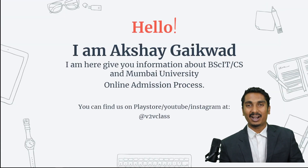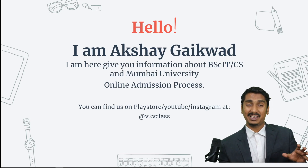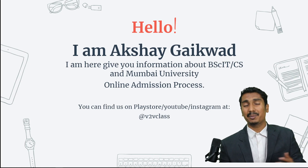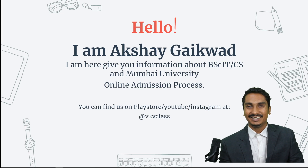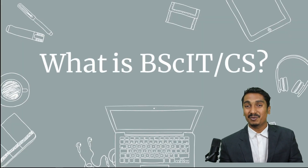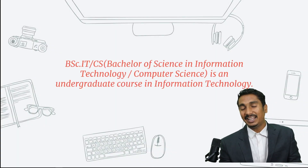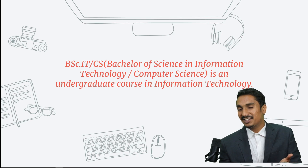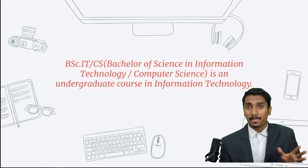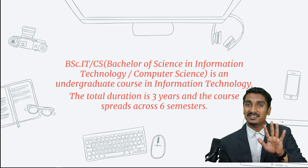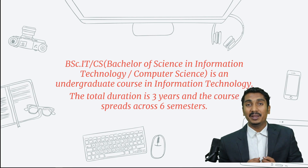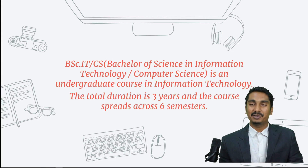Hello everyone, I am Akshay Gaikwad and I am here to guide you about BSCIT and Computer Science. BSCIT stands for Bachelor of Science in Information Technology, and BSc Computer Science is also an undergraduate course. It is a total of 3 years divided into 6 semesters. In BSCIT you will have 5 new subjects every semester, and in Computer Science you will have 6 new subjects every semester.